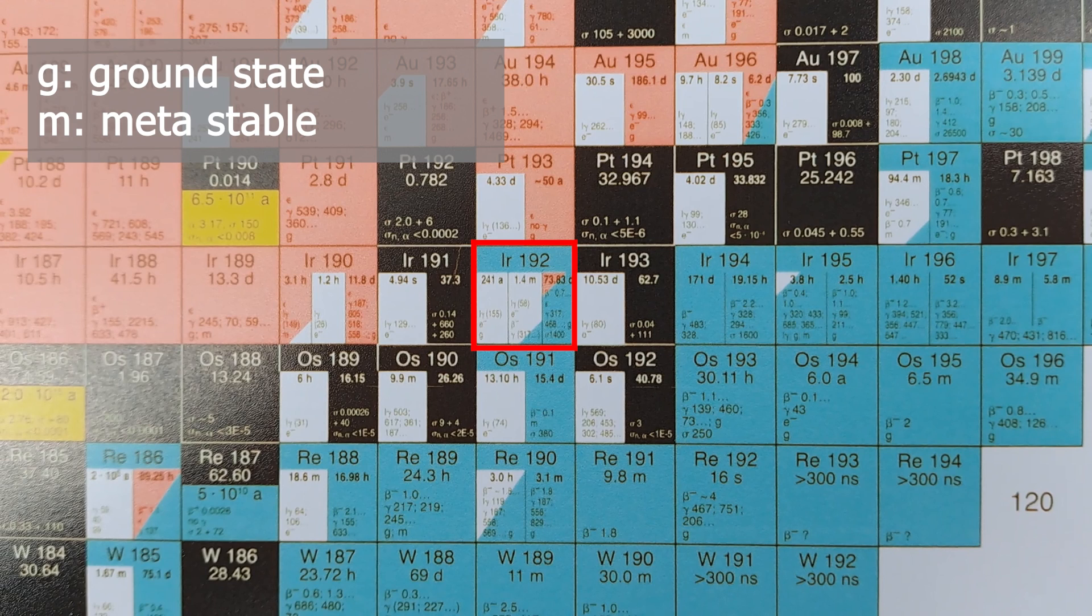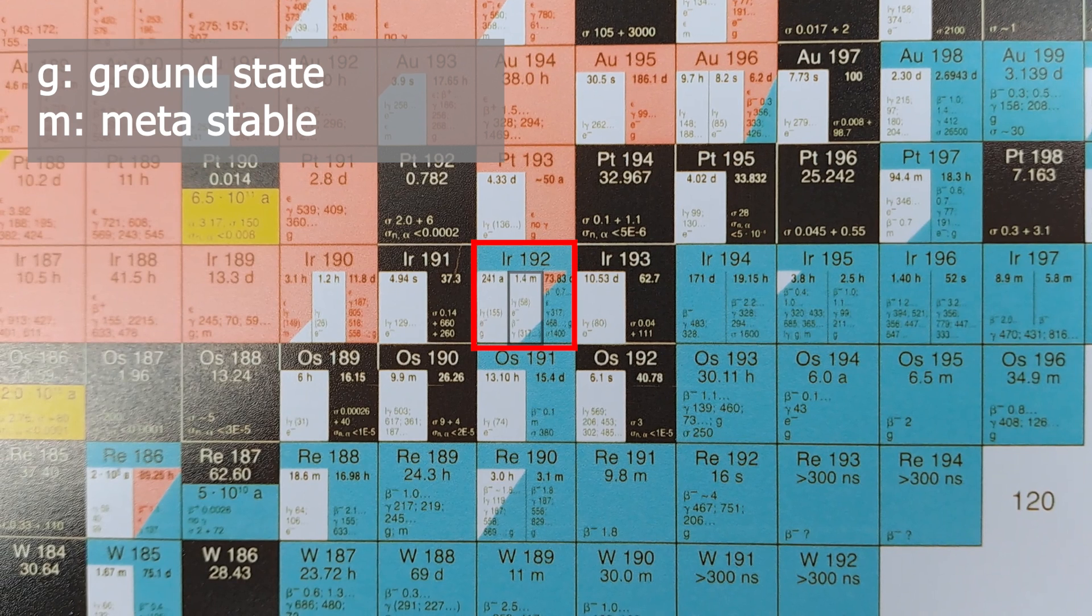For example, with Iridium-192, there is a 192M2, 192M1, and 192G. We can see that the Iridium-192M2 can only decay into the Iridium-192G based on the presence of this G. It doesn't go from M2 to M1 to G. Instead, it goes directly from M2 into G.